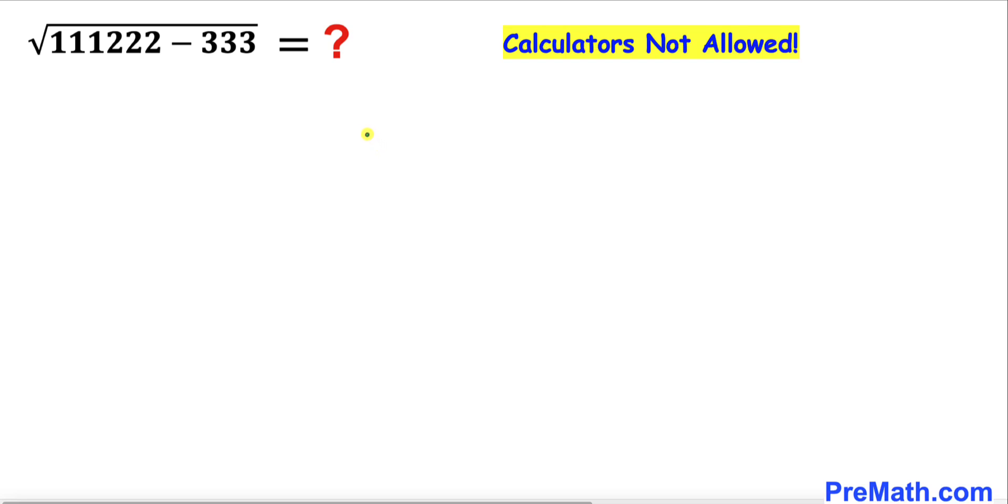Welcome to PreMath. In this video we are going to simplify the radical √(111222 - 333). Please don't forget to give a thumbs up and subscribe.